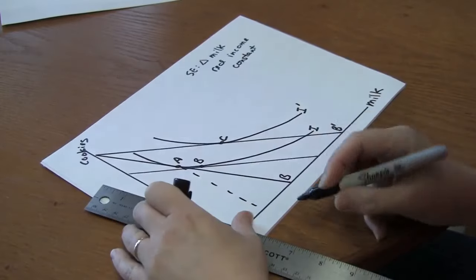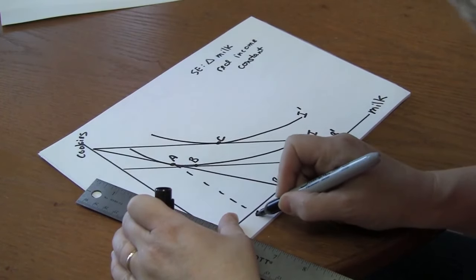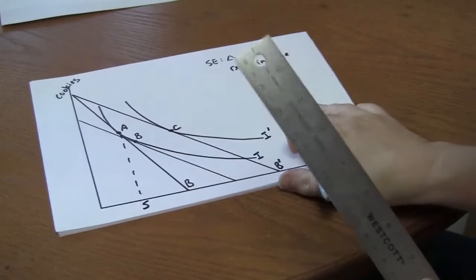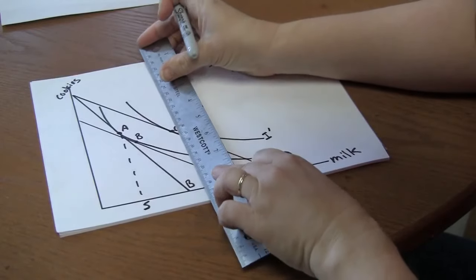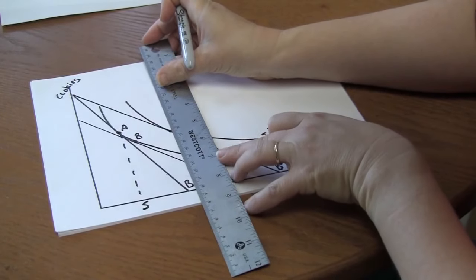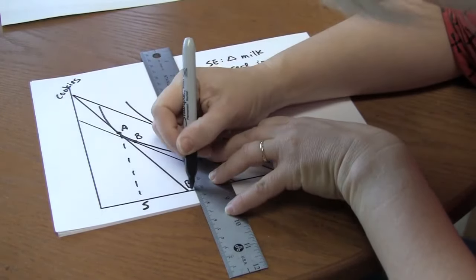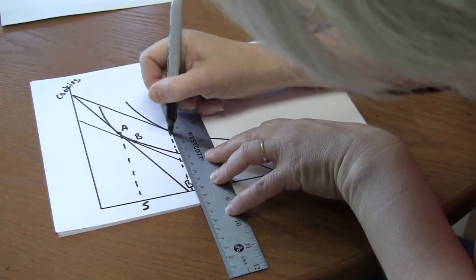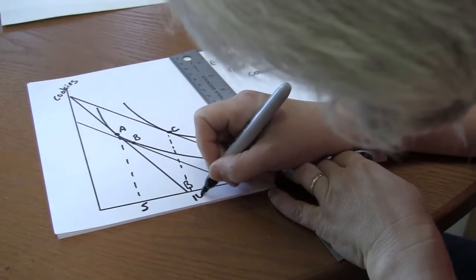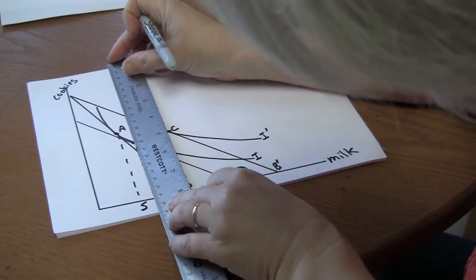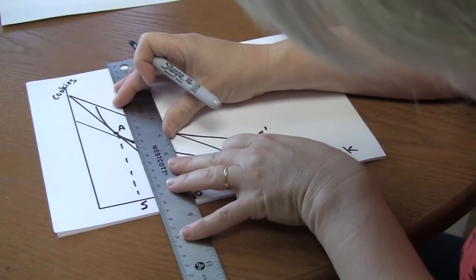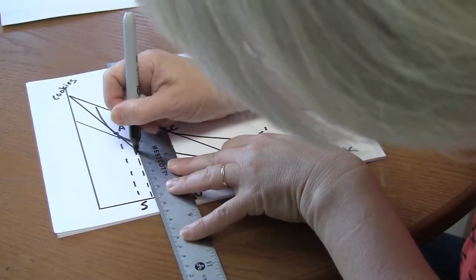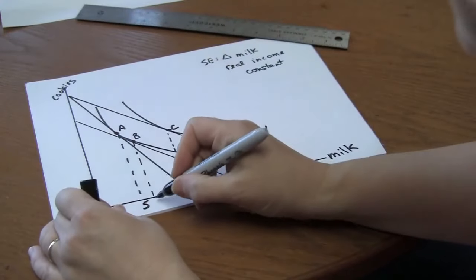Now the original choice might be something like five glasses of milk. Just put it over here so you can see it better. The original choice might be something like five glasses of milk. The new choice might be something like six glasses of milk. And this intermediate point might be something like six glasses of milk.